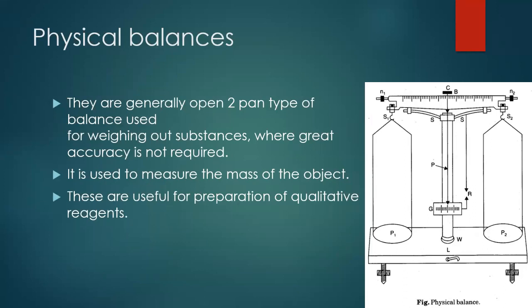Physical balances are used for preparation of qualitative reagents — reagents where we are just checking the presence or absence of a substance, not the exact concentration of the analyte. For qualitative measurements, we don't require high accuracy while preparing the reagents.